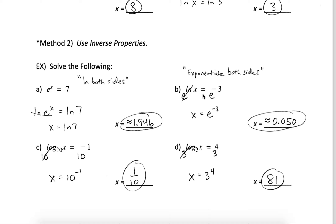In part b, we have the natural log of x equals negative 3. I'm going to exponentiate both sides — take the expressions on either side and push them up into the exponent spot with a base of e. E cancels the natural log, dropping x down. On the other side we have e to the negative 3rd power, which is approximately 0.05. We could also rewrite this as 1 over e to the 3rd power.